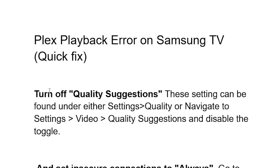Open the Plex app on your Samsung TV or any other TV and make sure to turn off quality suggestions. This setting can be found under Settings > Quality, or navigate to Settings, select Video, then Quality Suggestions, and disable the toggle.